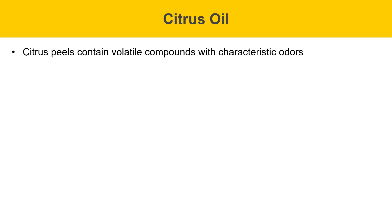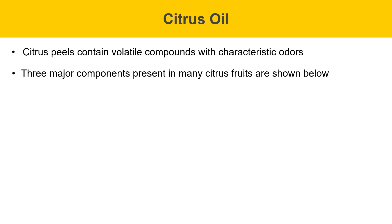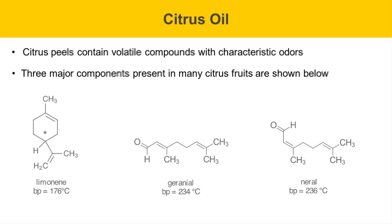Citrus peels contain volatile compounds that give them their characteristic odors. There are three major components present in many citrus fruits, and I'm showing those below. On the left is a compound called limonene, which has a boiling point of 176 degrees Celsius. It has a stereogenic center, which is indicated by a star. Limonene is chiral, which means it occurs as two enantiomers, and these have different odors, but in the GC experiment today, these will show up as a single peak.